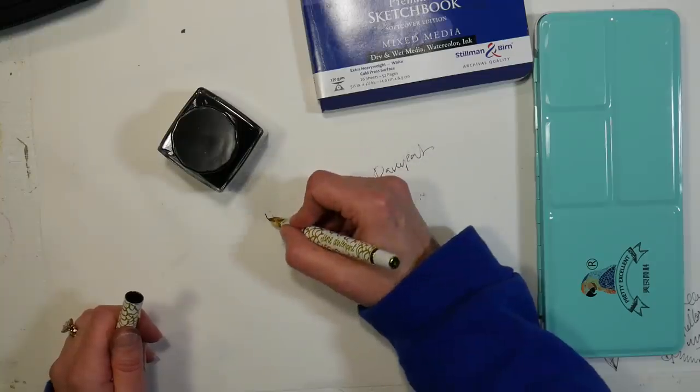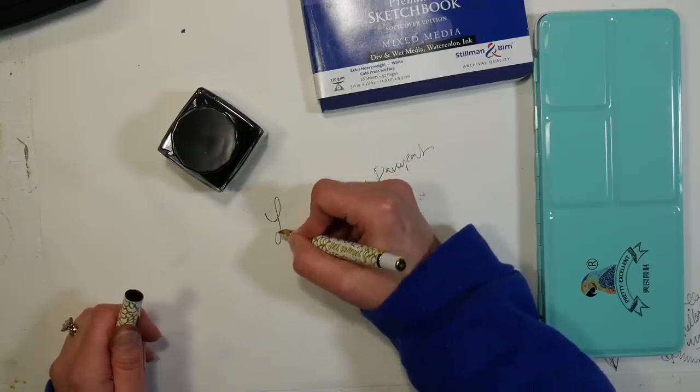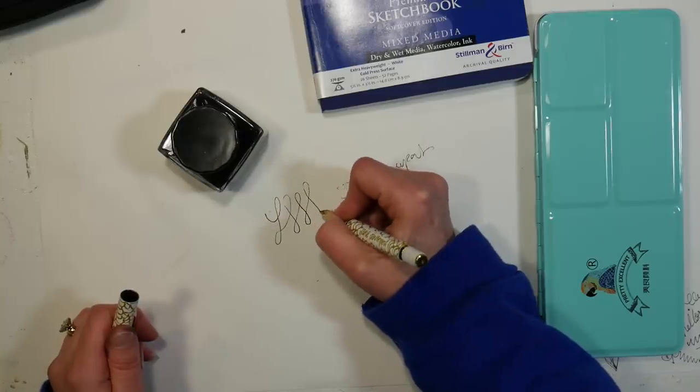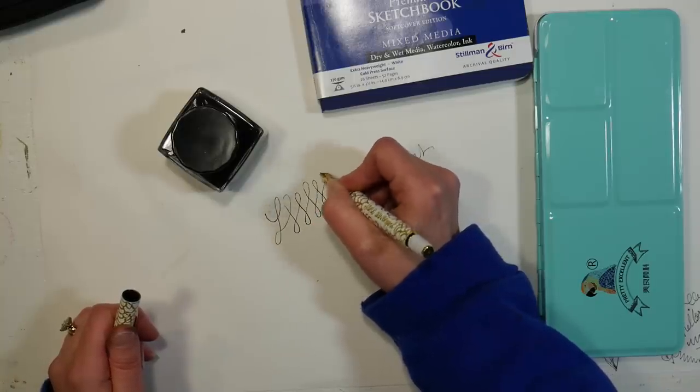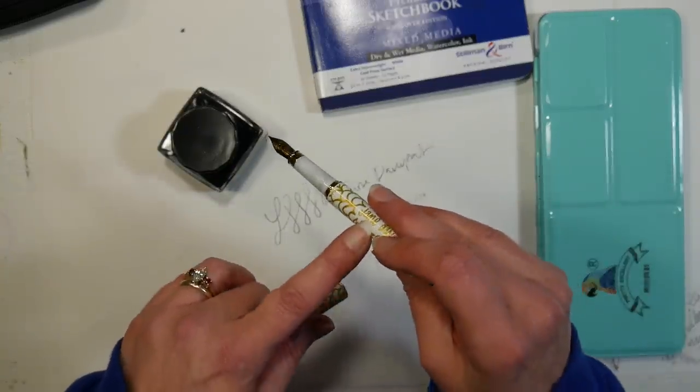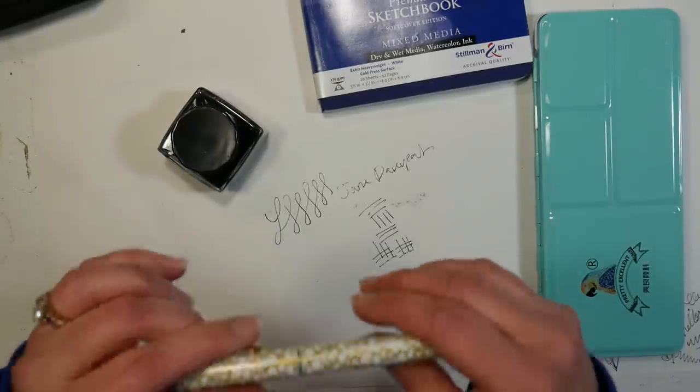So this is a Jane Davenport pen, I really like it because it is pretty smooth writing. It's easy to find, you can get it on Amazon or at Michael's stores, and it costs around eight dollars. It comes with a refillable cartridge in there, so you can refill it up with any ink you want.